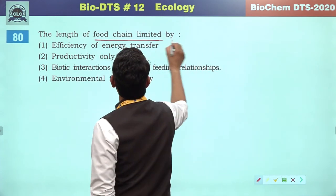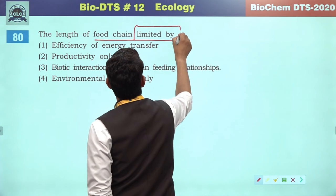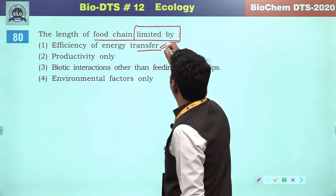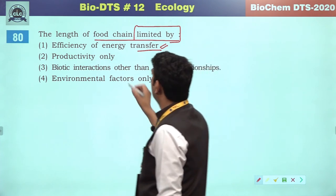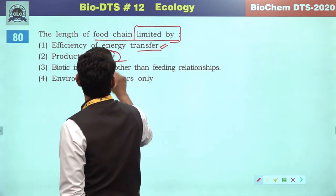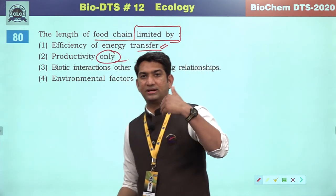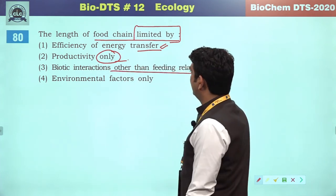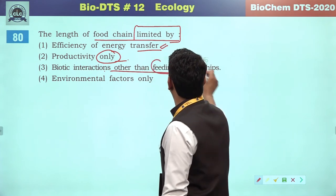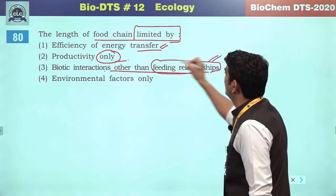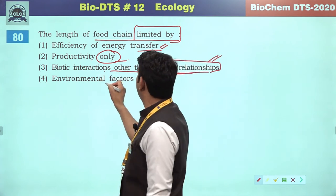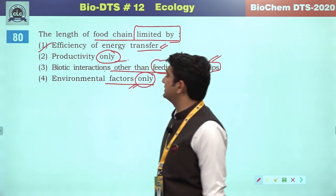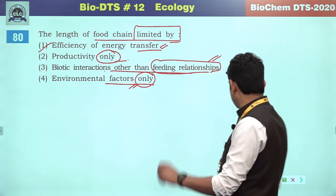The length of a food chain is limited by — efficiency of energy transfer — definitely. Productivity alone — productivity can increase food chain length. Biotic interaction other than feeding relationship — most important excluded aspect. Environmental factors only — this is not possible. Efficiency of energy transfer will be the correct answer.